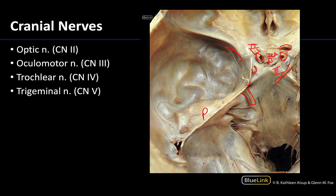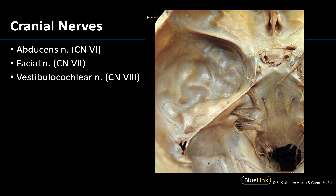The abducens nerve, or cranial nerve 6, is in this view very closely associated to the clivus or the basilar part of the occipital bone, right here on the occipital bone. Eventually it will make its way anteriorly to exit through the superior orbital fissure after traversing the lumen of the cavernous sinus, which is located all around this region here.